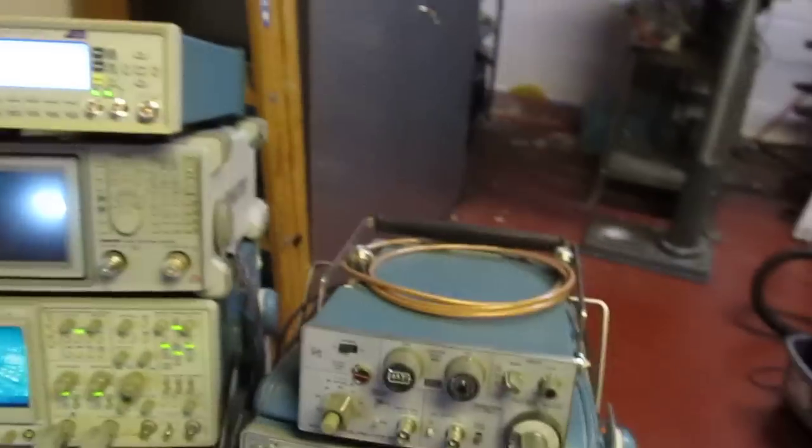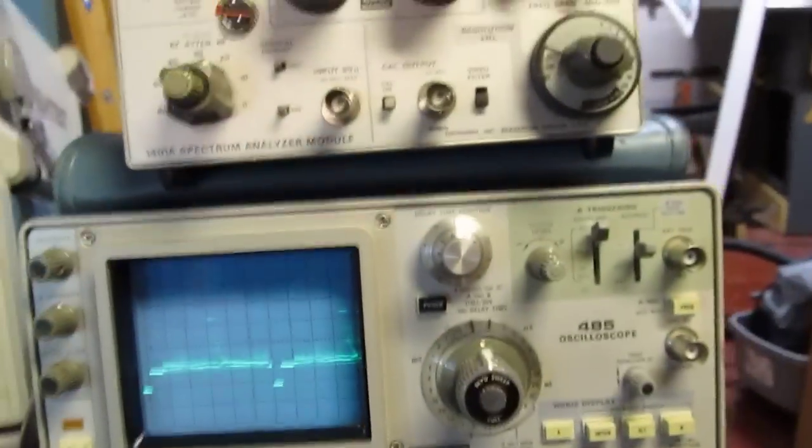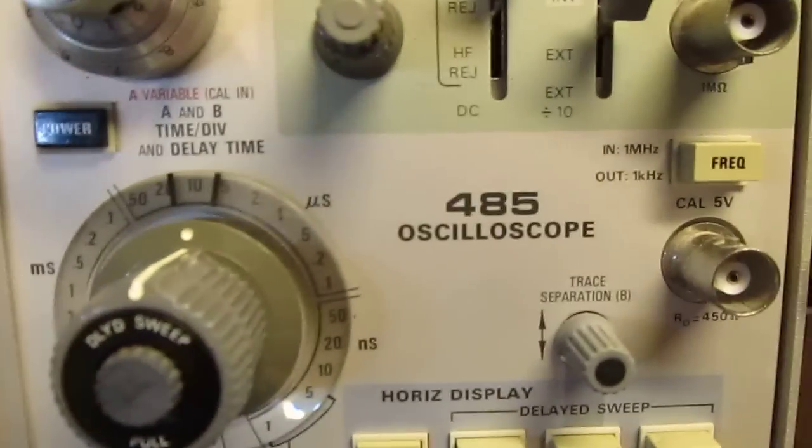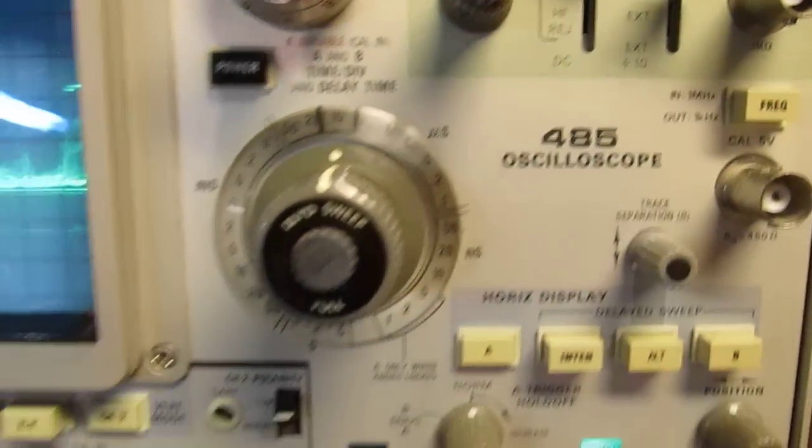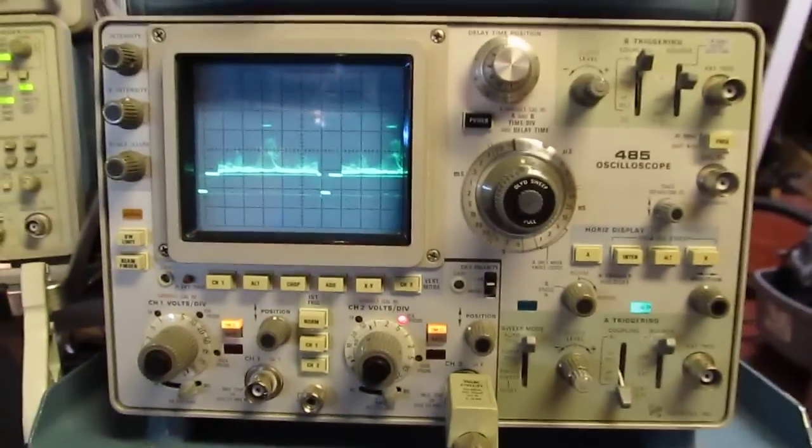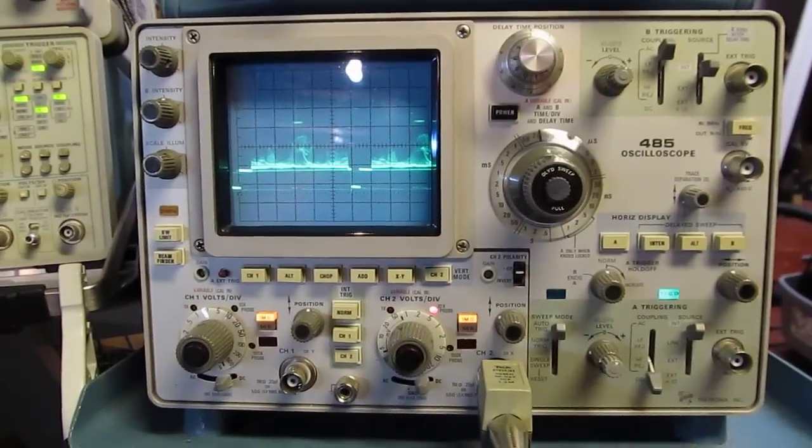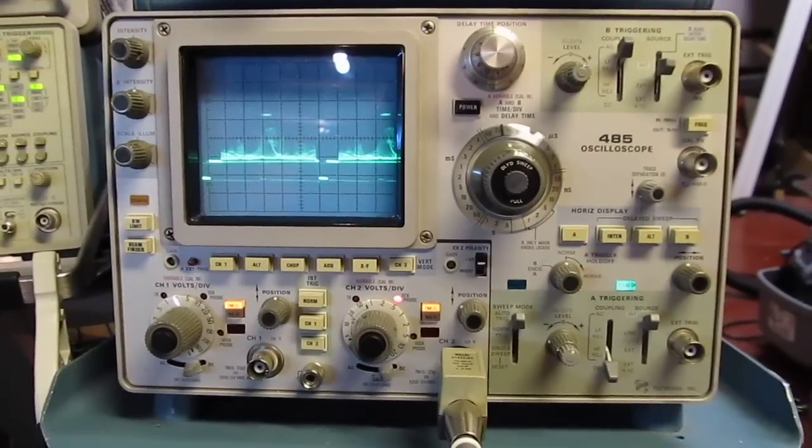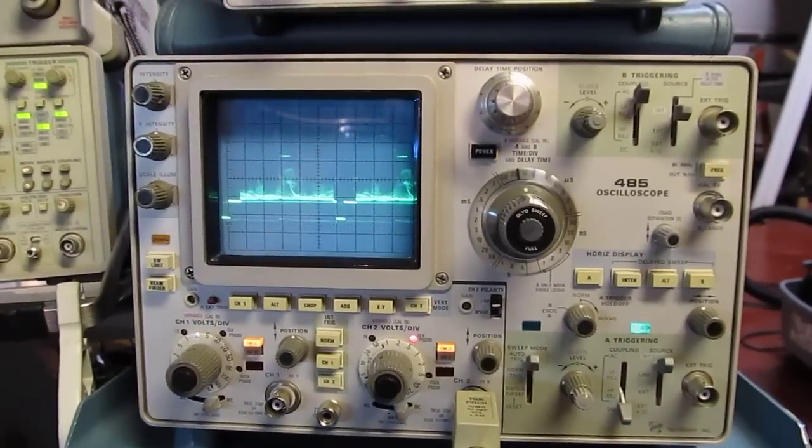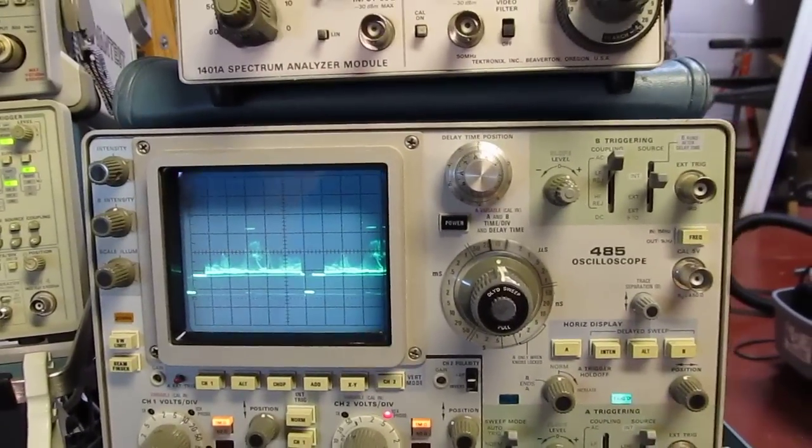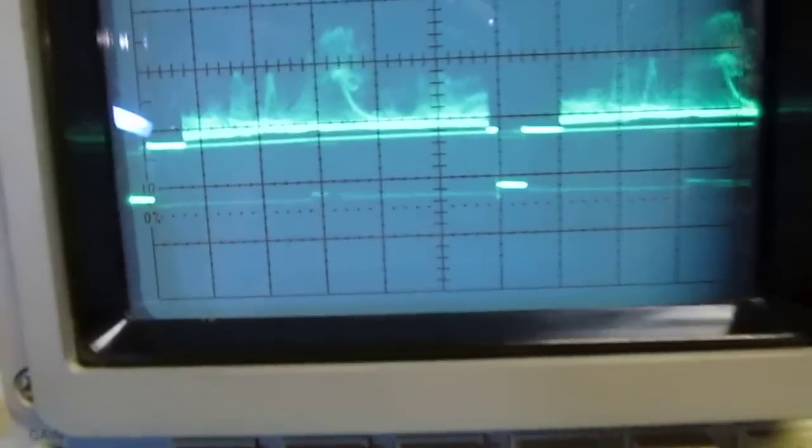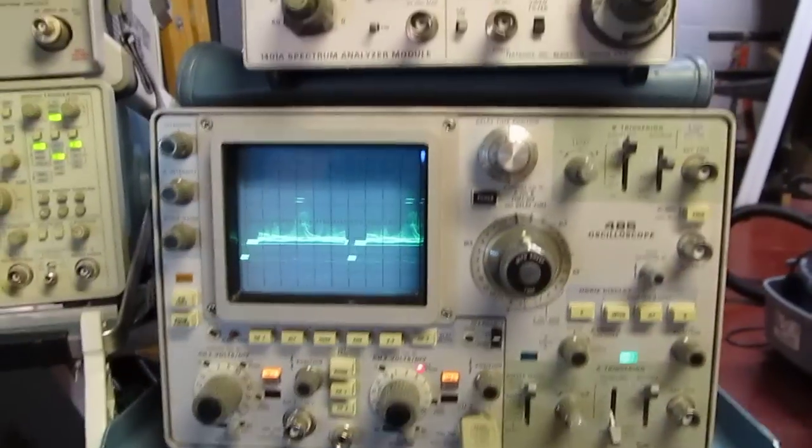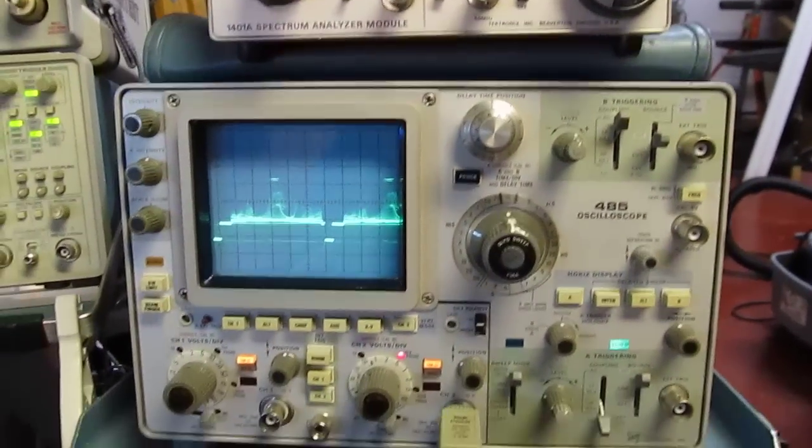Over here is the main bench with a number of different oscilloscopes. This scope here is a Tektronix 485, 350 megahertz two-channel scope from about 1980 vintage. It had the distinction of being the only portable 350 megahertz scope that would fit underneath an airline seat. All solid state, really nice scope and has one of the sharpest displays of any of the scopes that I own. It came to me in disrepair and I had to fix it, but well worth the effort.